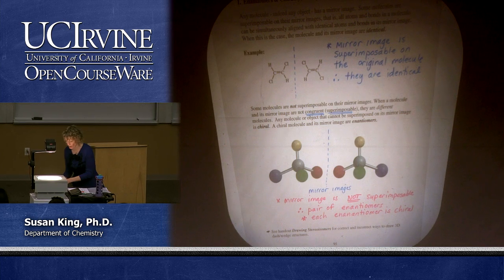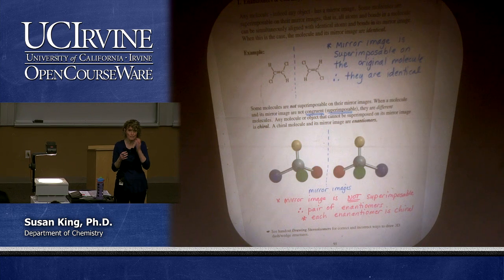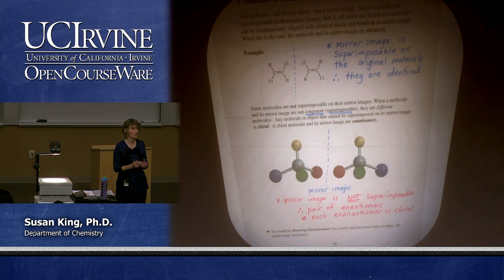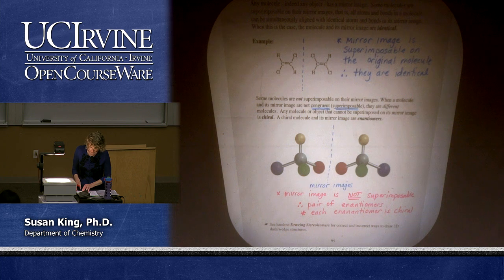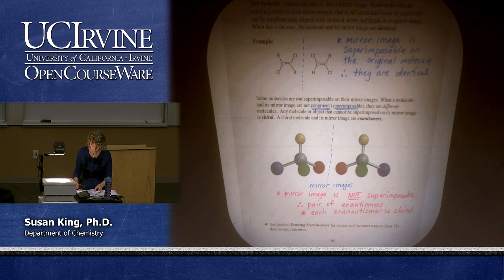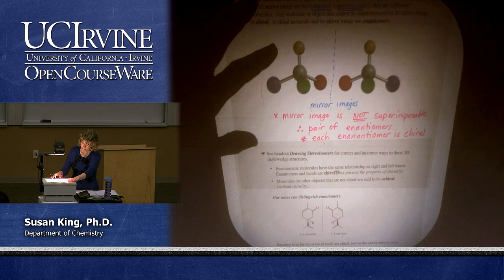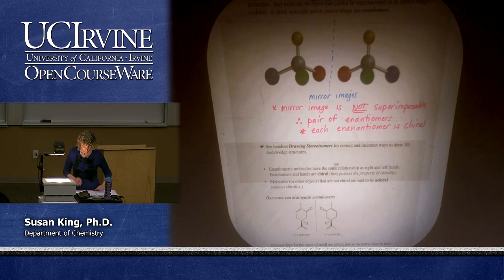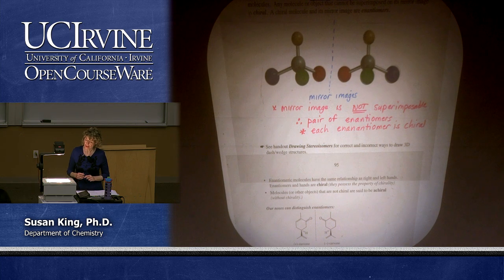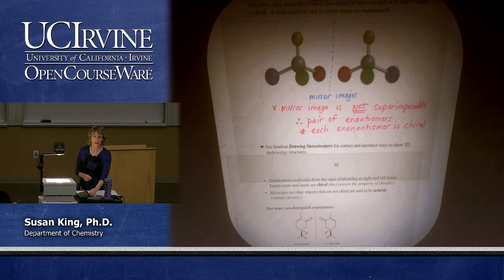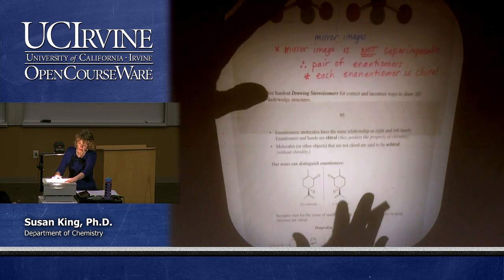This is really important for biology majors — enzyme active sites are chiral, so only one enantiomer will work in that active site. Enantiomeric molecules have the same relationship as right and left hands. Molecules or objects that are not chiral are said to be achiral. Our noses are also chiral — we can distinguish enantiomers. For example, carvone: minus-carvone smells like spearmint oil and plus-carvone smells like caraway seeds.